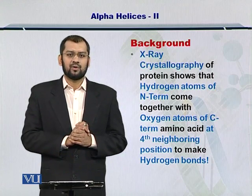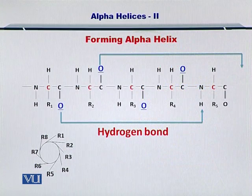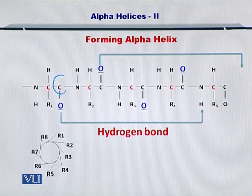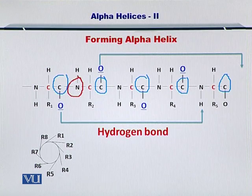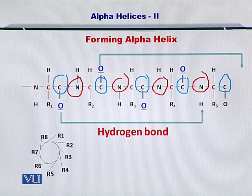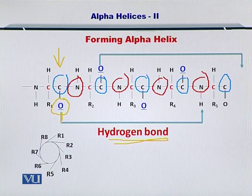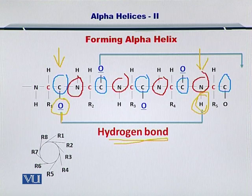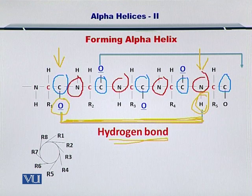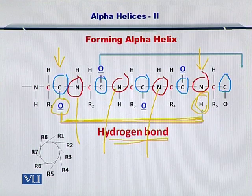Let me explain how this bonding actually takes place. In this diagram, you can see the C terminus in blue and the N terminus in red. Now if you look carefully, there is a hydrogen bond between the oxygen atom of this C terminus and the hydrogen atom of this N terminus. The distance between these two is exactly four residues. So let's count: 1 N terminus, 2 N terminus, 3 and 4.